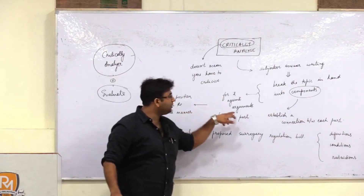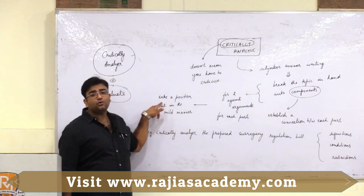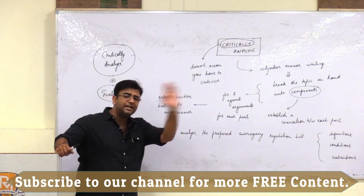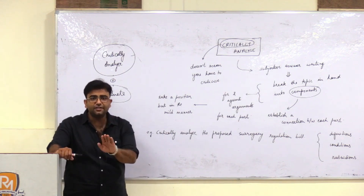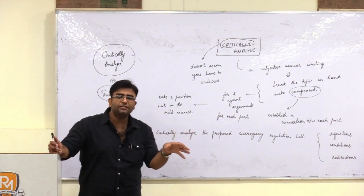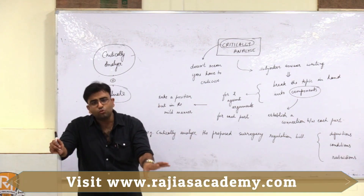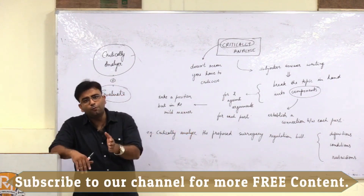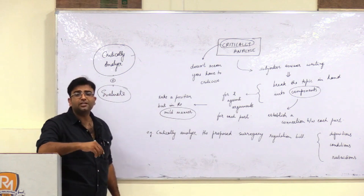After you establish for and against arguments for each part, you have to conclude the answer. While concluding, you should not just focus on either the pro arguments or the against arguments. You don't have to focus entirely on for arguments or entirely on against arguments. What you have to do is take a balanced approach, but you are always advised to take a position. If you think that for a particular question the for arguments are heavier than the against arguments, then explicitly say that since the pros overpower the cons, the argument stands. And if you think it has more loopholes and negative consequences, then you criticize it, but in a very mild manner.